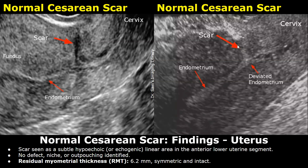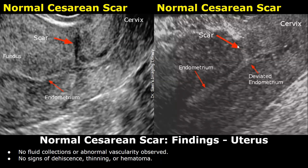Residual myometrial thickness (RMT) measures 6.2 mm, symmetric and intact. No fluid collections or abnormal vascularity observed. No signs of dehiscence, thinning, or hematoma.